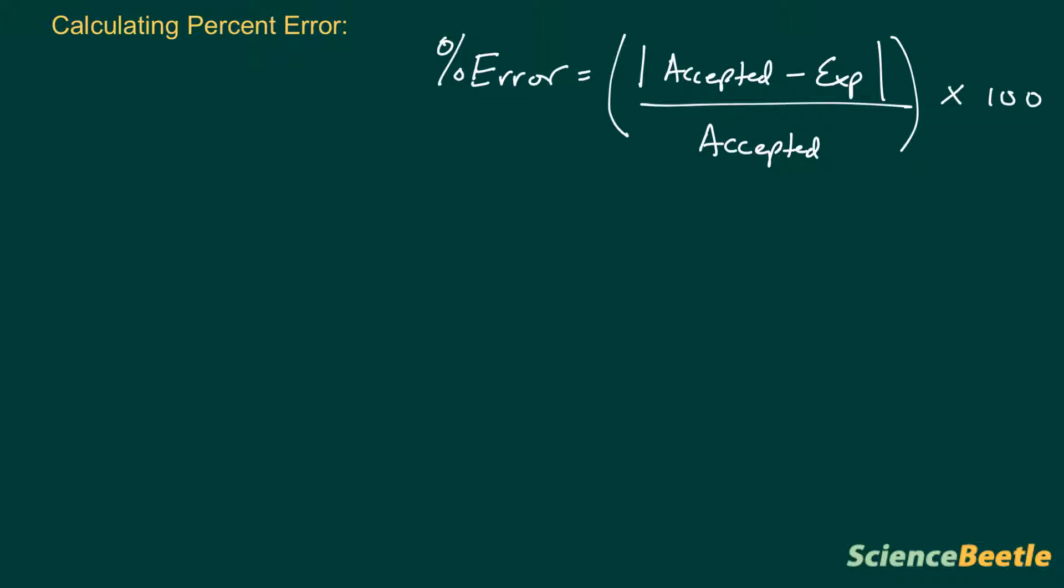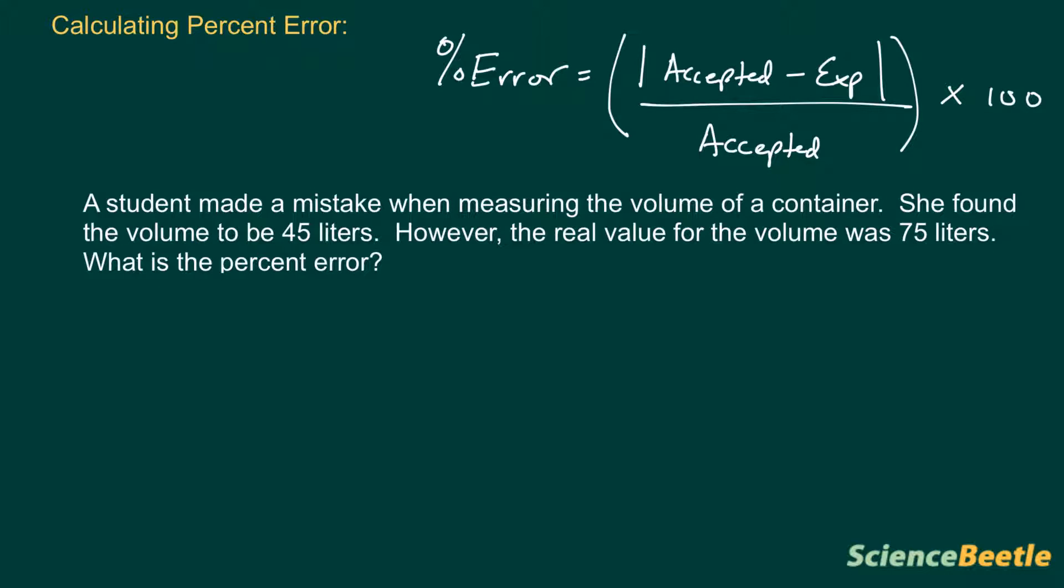So this is the actual way that you calculate it. Let's use this in an example here. A student made a mistake when measuring the volume of a container. She found the volume to be 45 liters. However, the real value for the volume was 75 liters. What is the percent error?